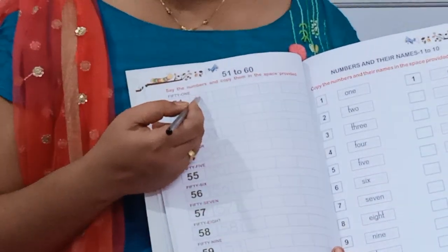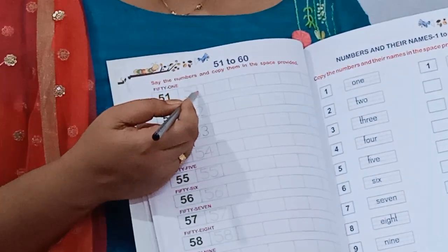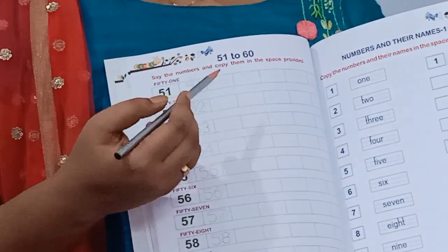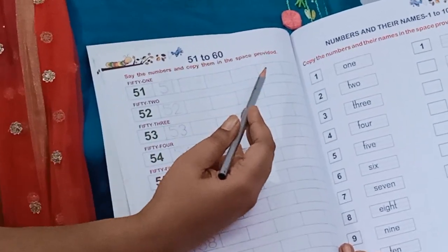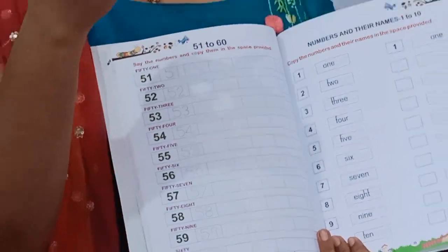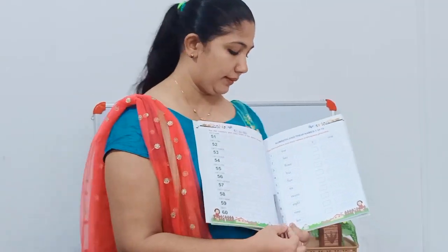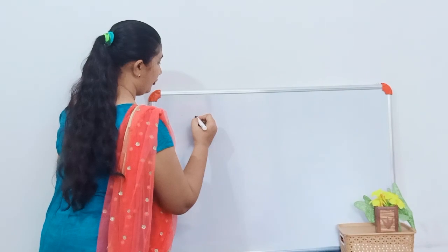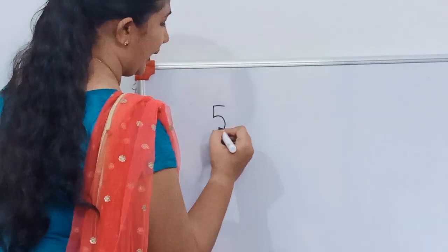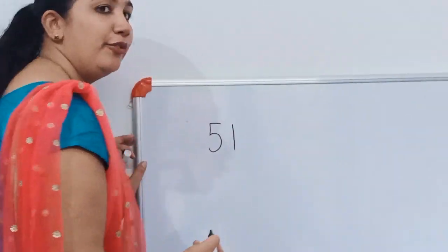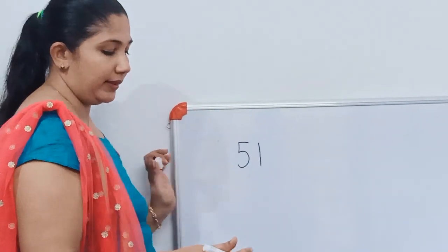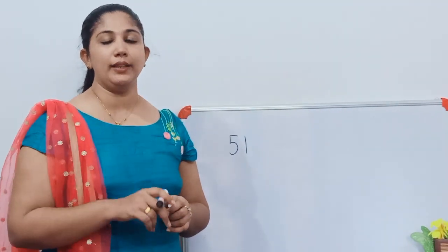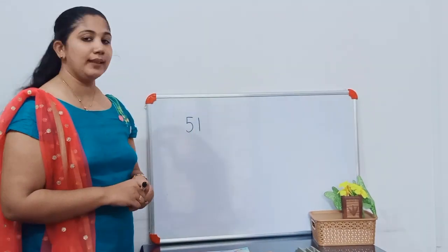Number 51. You can write number 51 using the dotted lines. Fifty-one, five-one. Take your own time. Good, good, good!